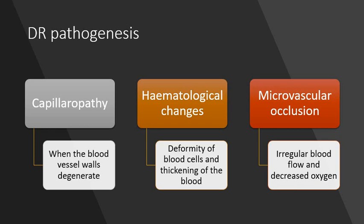So what happens to blood vessels in the presence of diabetes? High blood sugar causes several things to occur in the blood vessels. These are capillopathy, where the blood vessel walls degenerate; haematological changes, where you get deformity of blood cells and thickening of the blood; and finally microvascular occlusion, which is where you see irregular blood flow and decreased oxygen.